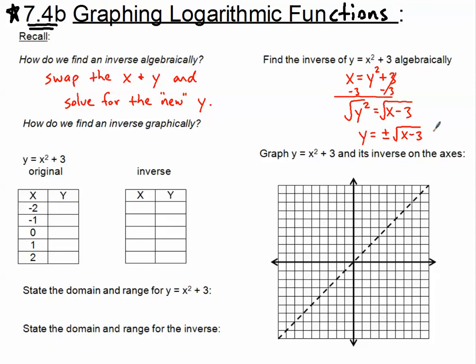How do you find an inverse graphically? Well, what we would do is we'd create a t-table, or a bunch of ordered pairs for our original, and then we would just swap the x's and the y's. So if I take my original, y equals x squared plus 3, and plug in these five inputs, I'm just picking a 0, some positives, and some negatives. Squaring negative 2 and then adding 3, of course, gives me 7. Squaring a negative 1 and adding 3 gives me a 4.